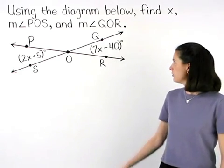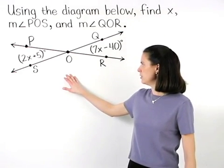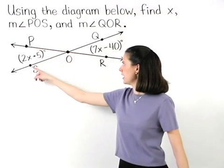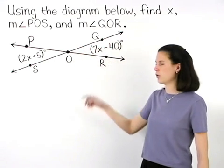In this problem, we're asked to use the diagram shown to find x, the measure of angle POS, and the measure of angle QOR.